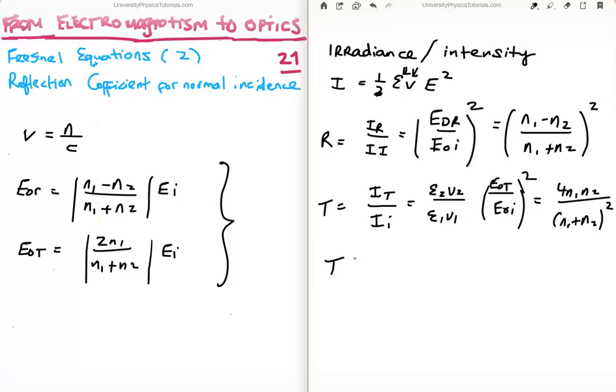What's interesting is if you do the algebra, you realize that the transmission coefficient and the reflection coefficient sum to 1. So for example, if you're given the percentage of light which has been reflected, you immediately know how much has been transmitted.